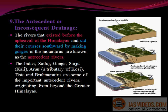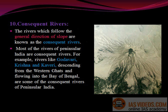Consequent rivers: The rivers which follow the general direction of slope are known as consequent rivers. Most of the rivers of Peninsular India are consequent rivers. For example, rivers like Godavari, Krishna, and Cauvery, descending from the Western Ghats and flowing into the Bay of Bengal, are some of the consequent rivers of Peninsular India.